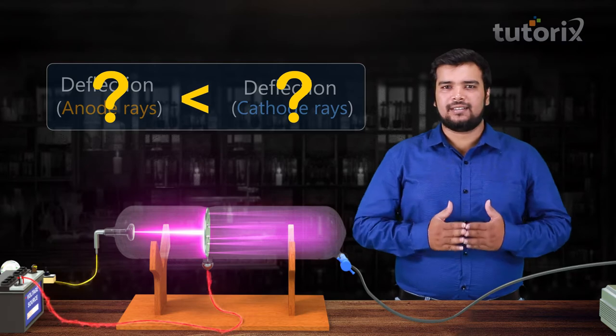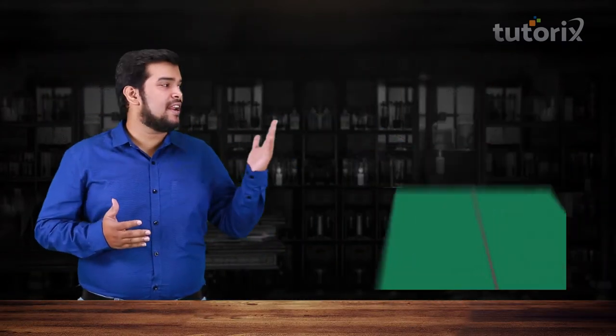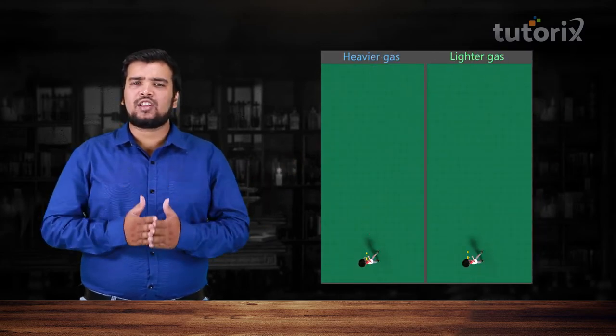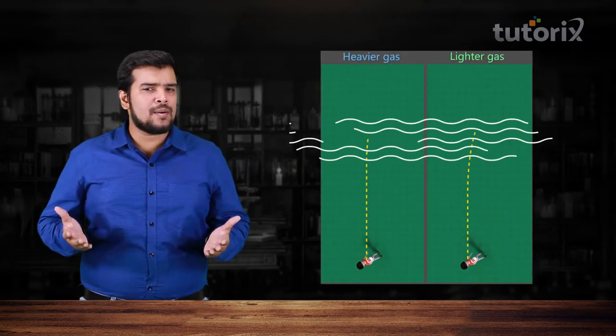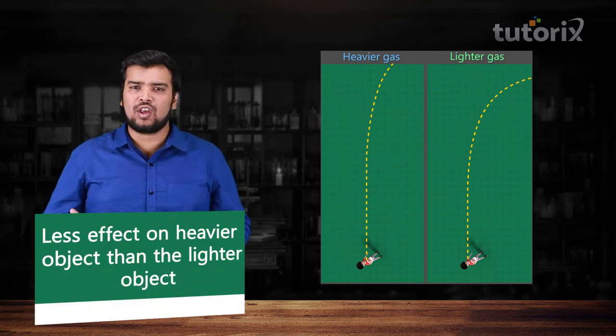But why is that? Well, I want to remind you that we learned in our ball and wind example that the effect of a perpendicular force on a moving particle in a straight line is always less in case of heavier objects compared to lighter objects.